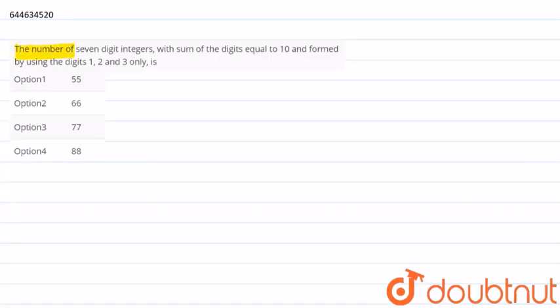The number of seven digit integers with sum of digits equal to 10 and formed by using the digits 1, 2, 3 only. So now from this we found that there are two possible cases.